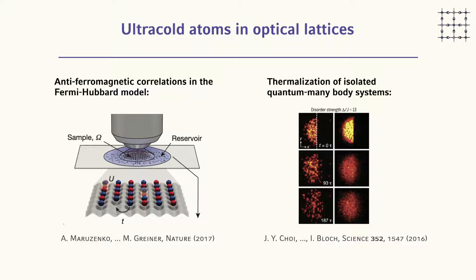On the other hand, we have non-equilibrium dynamics: we can prepare well-defined initial states and let them evolve according to some Hamiltonian accessible in the lab. This allows us to answer fundamental questions regarding the thermalization of isolated quantum systems. Here I show a picture from Immanuel Bloch's group where atoms were initially prepared in half the system and then you watch them evolve in time to ask if the system thermalizes. We are now in a regime that touches the boundaries of what we can do with classical simulations.